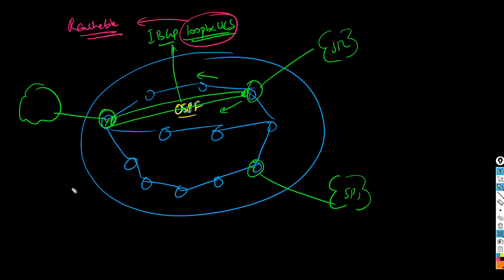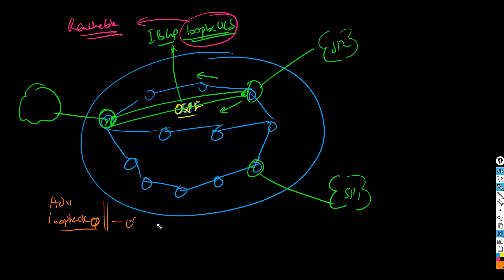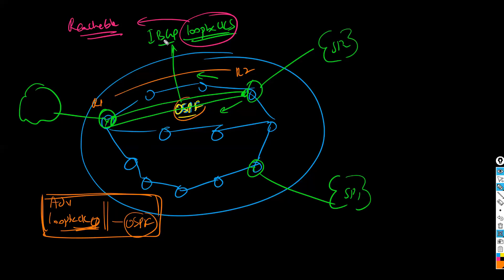This loopback reachability is provided by advertising the loopback interfaces in OSPF. In my example I'm using loopback 0, so we need to advertise this loopback in OSPF. When Router 1 and Router 2 both advertise their loopbacks in OSPF, they know each other's loopback addresses and become reachable — and that's how the BGP neighborship will form. Even though we're running BGP, we still depend on IGP — that is OSPF, IS-IS, EIGRP, RIP, or any routing protocol — to provide reachability.